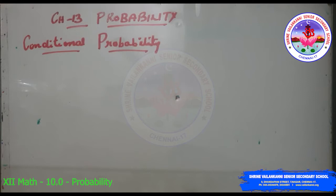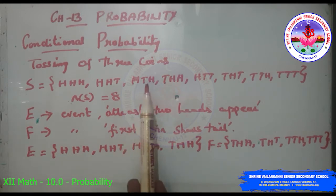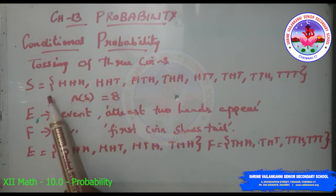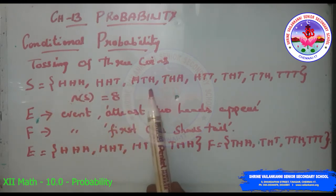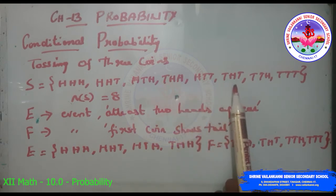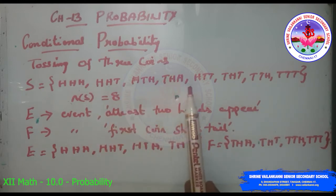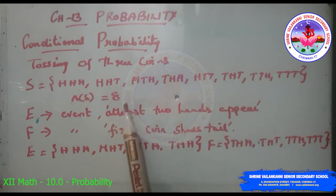This is also related to multiplication rule of probability and independence of events. Consider the experiment of tossing three fair coins. The sample space consists of: HHH, HHT, HTH, THH, HTT, THT, TTH, and TTT. So the number of elements in sample space, n(S), is eight.